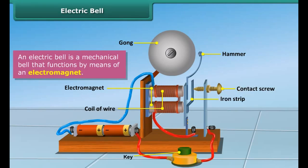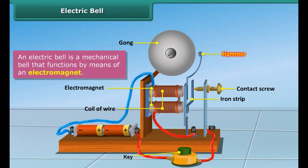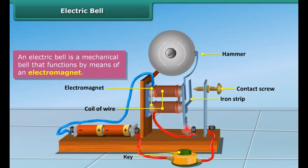When the iron strip is in contact with the screw, current flows through the coil, turning it into an electromagnet. It then pulls the iron strip, and in the process, the hammer at the end of the strip strikes the gong of the bell to produce sound.